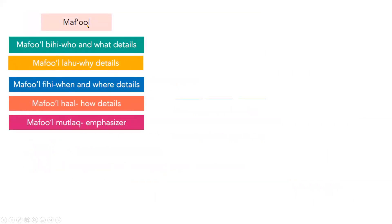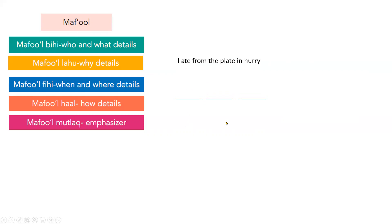To summarize the different types of maf'ul: maf'ul bihi = who and what details; maf'ul lahu = why details; maf'ul fihi = when and where details; maf'ul haal = how details; maf'ul mutlak = emphasized/stressed details. For example in English: 'I ate from the plate in a hurry' — 'from the plate' is where, 'in a hurry' is how.